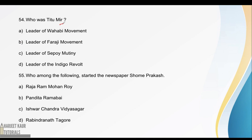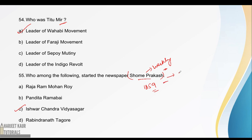Who was Titu Mir? Titu Mir was the leader of the Wahabi movement. The Wahabi movement was also associated with Syed Ahmed. Next: who among the following started the newspaper Shom Prakash? The Shom Prakash newspaper was started by Ishwar Chandra Vidyasagar in 1859. It was a weekly newspaper and was very famous for its contribution to the Indigo movement.